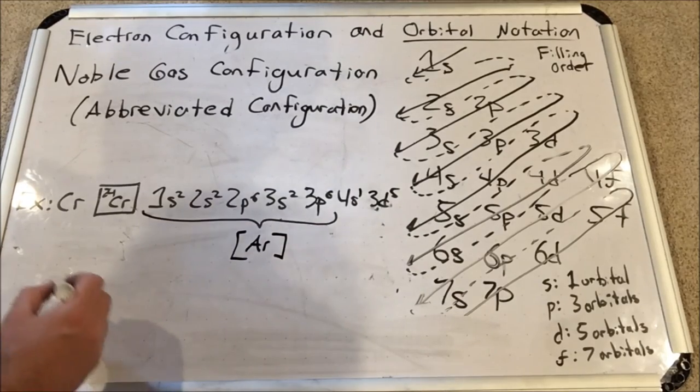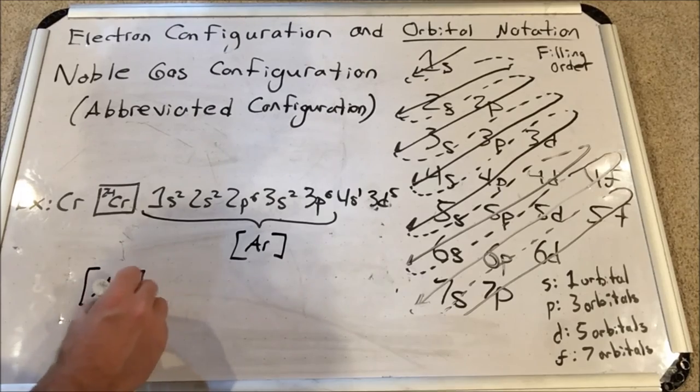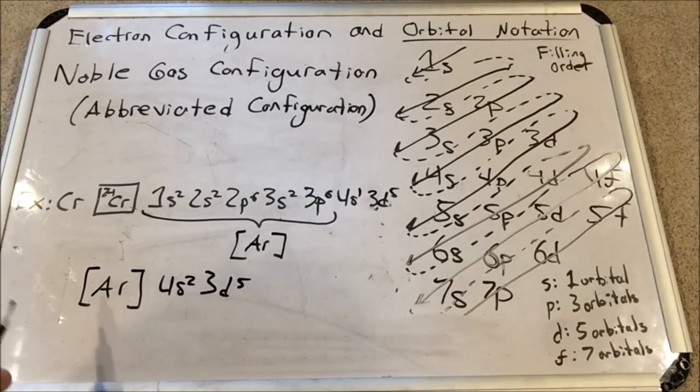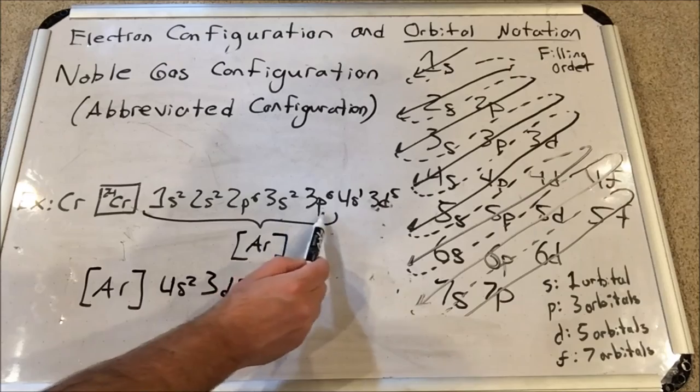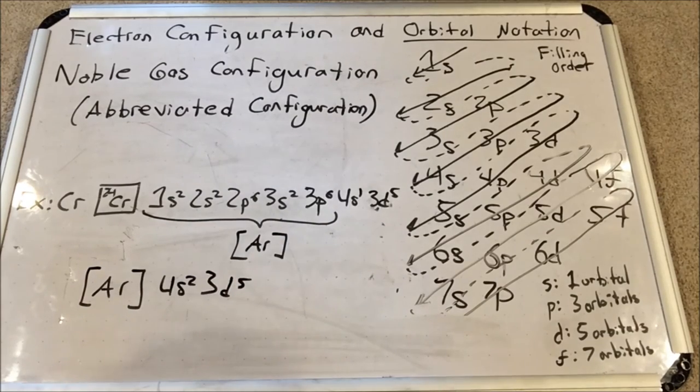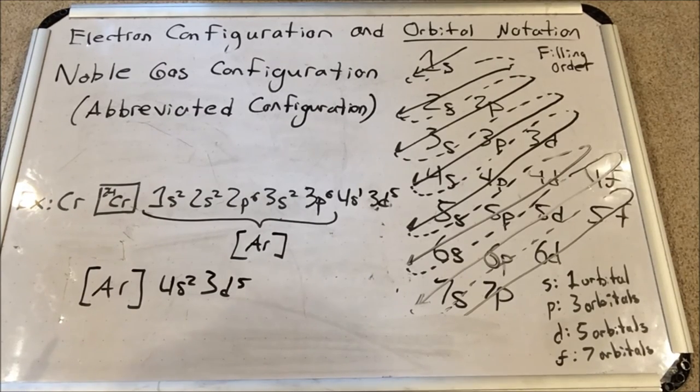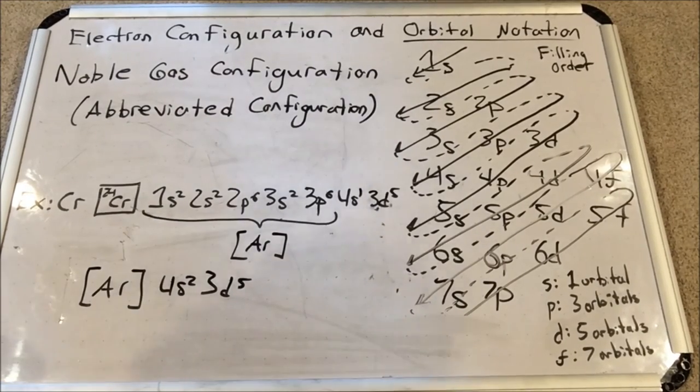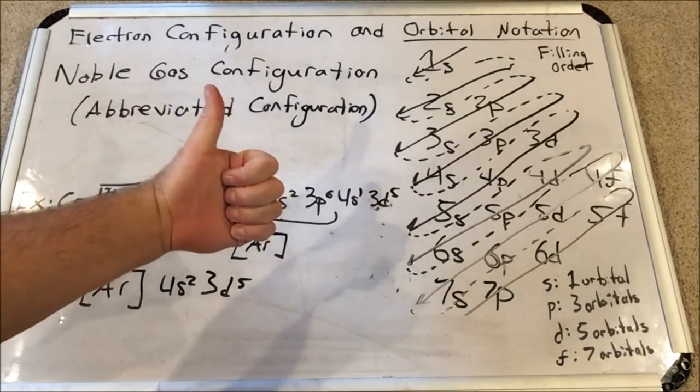So we'd write the electron configuration for chromium like this: argon [Ar] 4s1 3d5. Everyone who knows noble gas configuration knows that this stands for all of argon's exact electron configuration. As you can see, this is quite helpful when you're writing electron configurations with large atomic numbers. All right guys, this has been this two-part series on electron configuration and orbital notation. I hope it helps you, leave some comments for me. Thanks for watching, this is Falconator signing out.